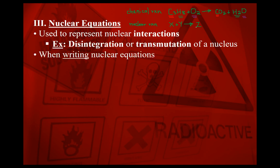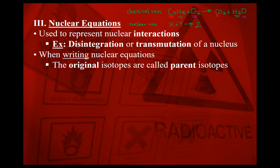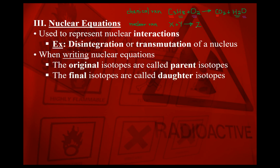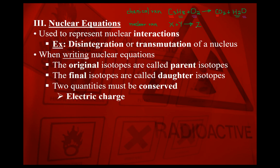Here are some rules in writing nuclear equations. One, the original isotopes are referred to as the parent isotopes — those are your reactants. The final isotope or isotopes are referred to as daughter isotopes — those are your products. When you write a nuclear equation, there are two quantities that need to be conserved: electrical charge and the number of nucleons.